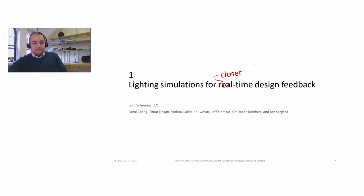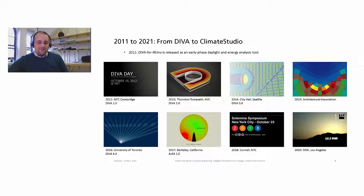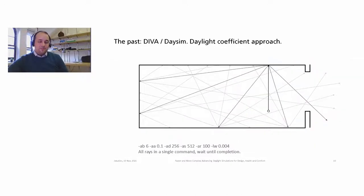So first, lighting simulations for closer to real-time design feedback, because real-time is difficult. This is with my company, Solema. The members being Demi, Timur, Violeta, Jeff, Kristoff, and John. And I thank all of them for the work we've put into this together. And we've, for better or worse, been in the simulation front in space for quite some time. We released Diva for Rhino in 2011 and continued developing that up until about 2018. In 2017, we released a software called Alpha that helped us calculate, instead of RGB, but we calculate 81 specific spectral irradiance channels. And in 2020, we released a new software called Climate Studio.